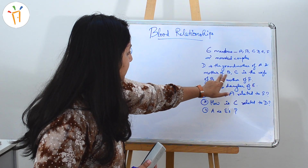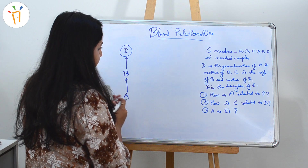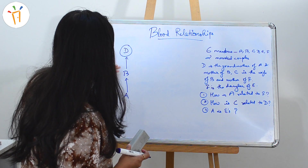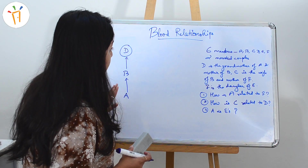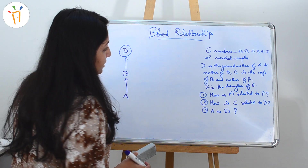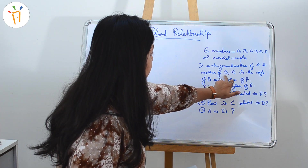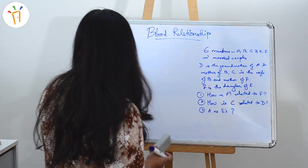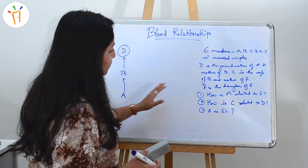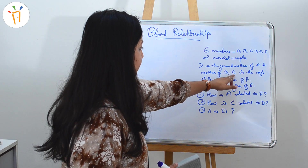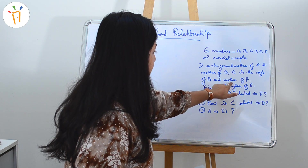D is the mother of B, so we can write B here. D is the grandmother of A and mother of B, but the gender of B and A is not specified yet, so we'll keep it as it is for now. Let's move on to the next part: C is the wife of B and mother of F.